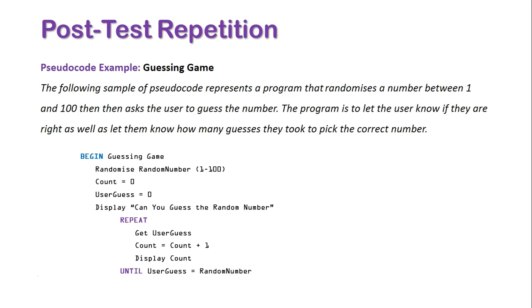As you can see, after the UNTIL keyword, the condition is being assessed there, as opposed to pre-test repetition, where we had the WHILE statement at the beginning of the loop, and that's where the condition was assessed. And that's essentially the difference between these two types of loops, the pre-test and the post-test.